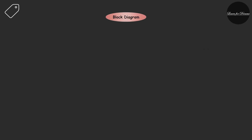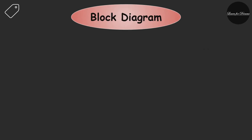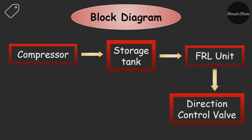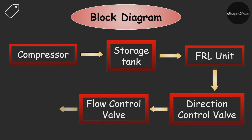Now let's see the block diagram for how a pneumatic system works and how the components are arranged. Starting with the compressor, then the storage tank, then the FRL unit, then the direction control valve, next the flow control valve, and last is the actuator.